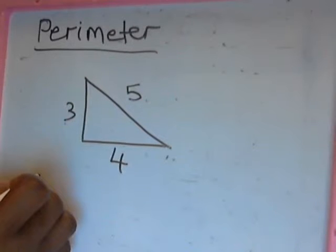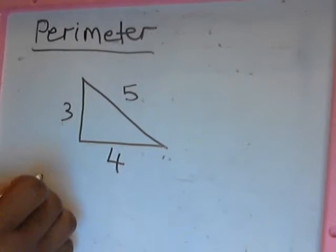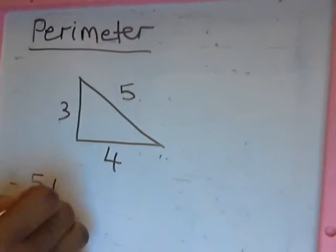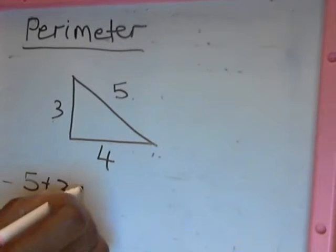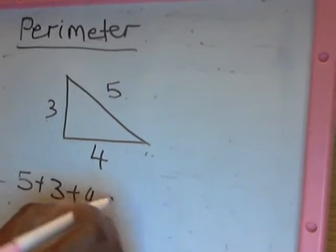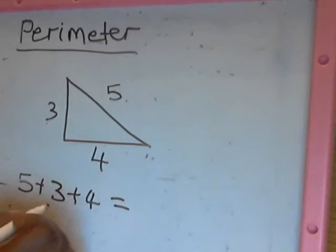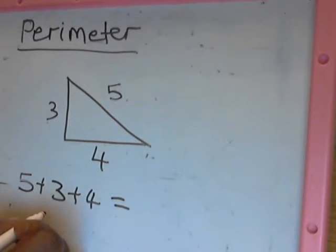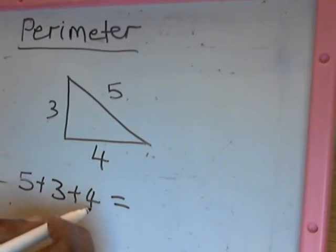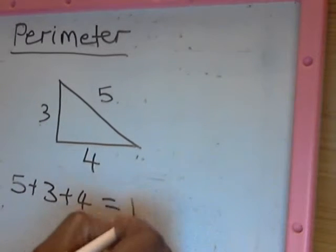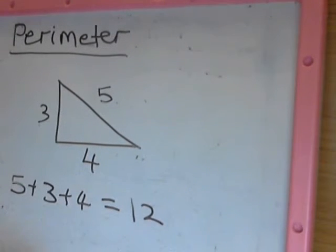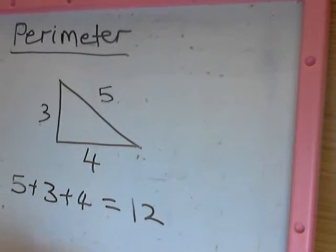So we have 5 plus 3 plus 4. Five plus three will give us 8, 8 plus 4 will give us what? 12, right. So that's the perimeter.